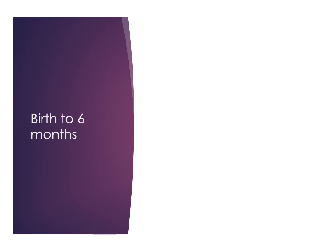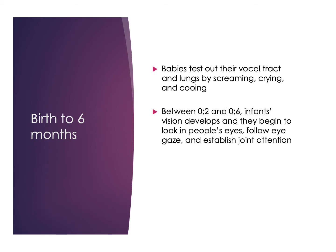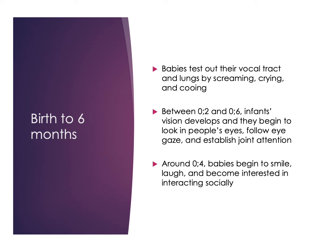Once we get into the birth-to-six-month period, babies start testing out aspects of linguistic use — things like screaming, crying, cooing, and general noise-making, which test their lung capacity and vocal tract. Between two and six months, vision develops and babies really start being able to look into people's eyes, follow eye gaze, and establish joint attention. Around four months, babies really start to smile, laugh, and become interested in social interaction — one of the first things to develop is our social interaction with other humans.